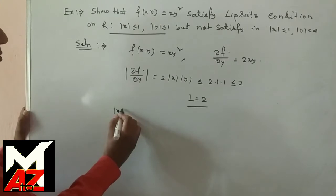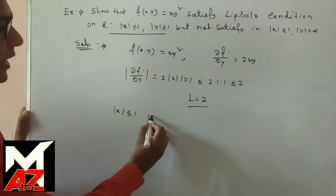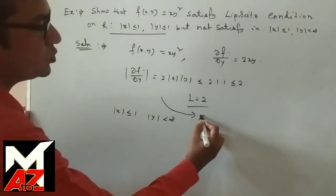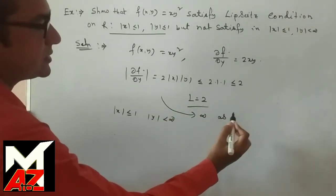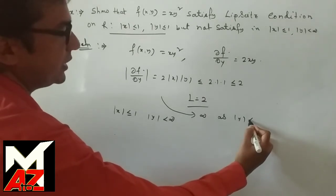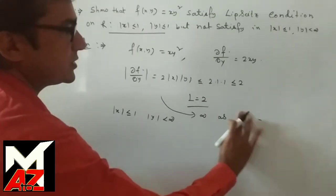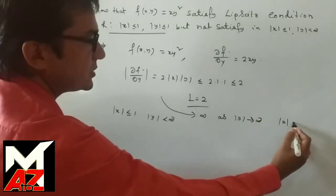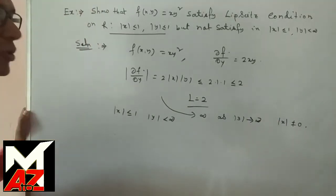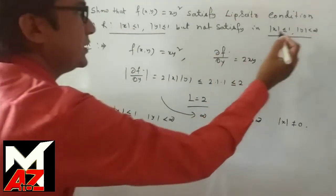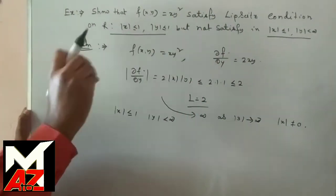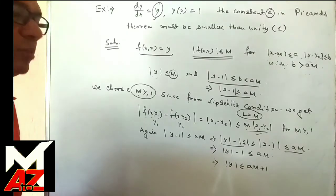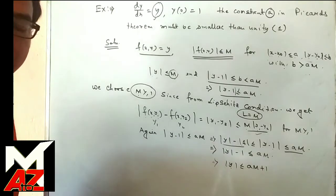But if |x| ≤ 1 and |y| < ∞, then |∂f/∂y| = 2|x||y| tends to infinity as |y| → ∞ when |x| ≠ 0. So in this unbounded region, the Lipschitz condition is not satisfied.